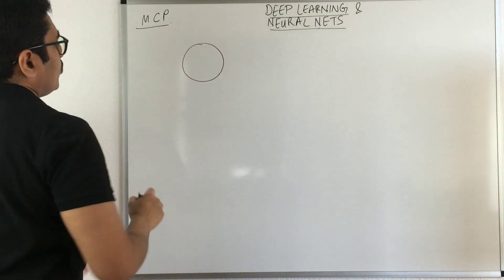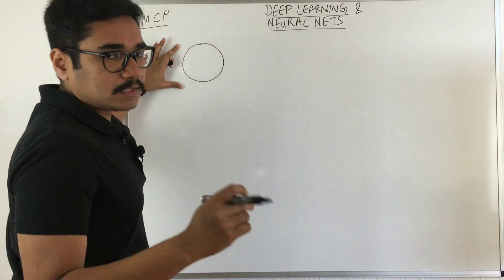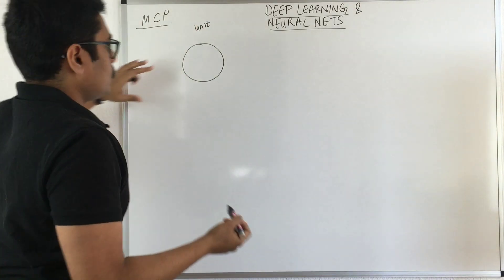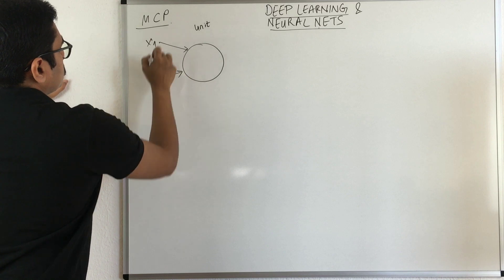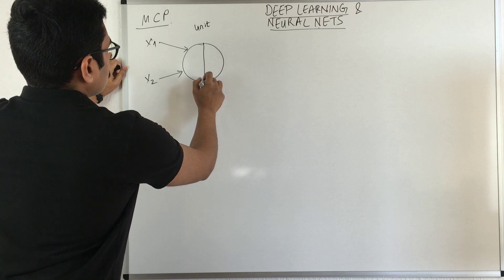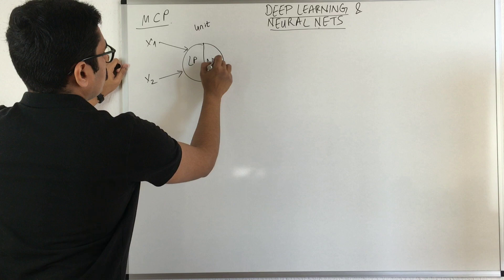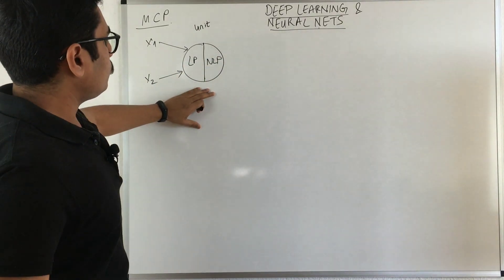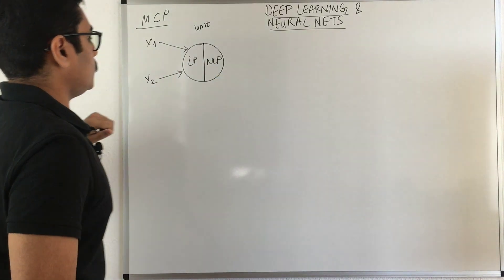What we basically have is this unit. We don't call this a neuron, but we coin this as the term unit. We give two inputs X1 and X2, and this particular unit consists of two parts: first you have a linear part, and then you have a nonlinear part. We'll come down to the line why we require these two different parts and why the nonlinear part is most important in neural networks.